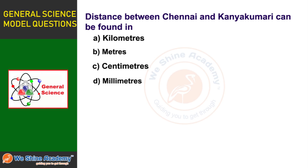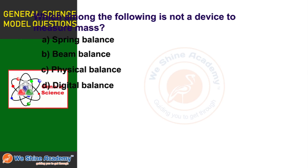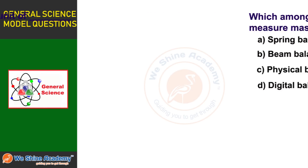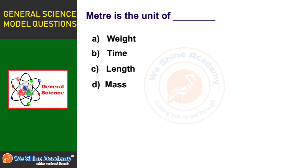The next question is: Which among the following is NOT a device to measure mass? Option A: spring balance, Option B: beam balance, Option C: physical balance, Option D: digital balance. The answer is Option A: spring balance.